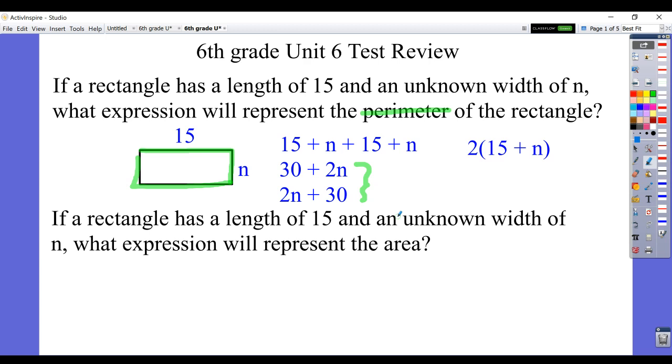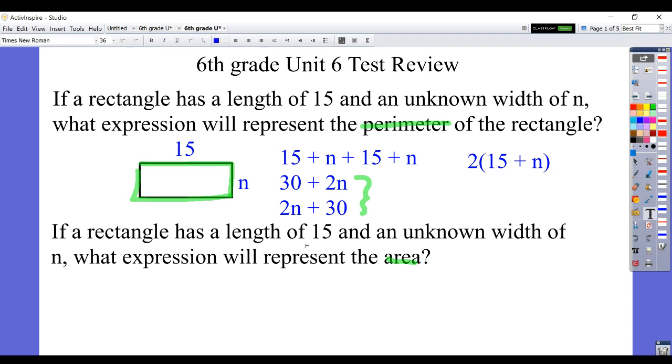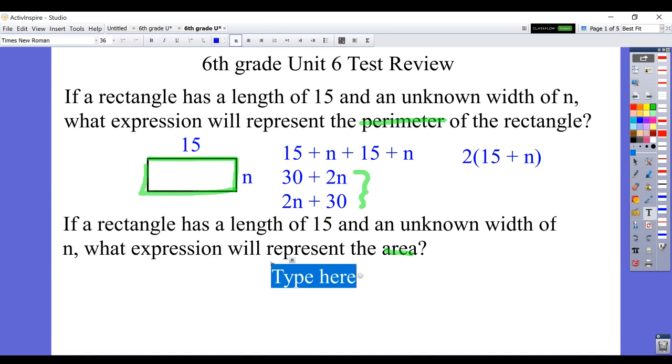Same concept for the second question, only this time we want an expression to represent the area. That's going to be a little more simplistic because to find the area, you just multiply the length times width. And we can write that simply as 15n.